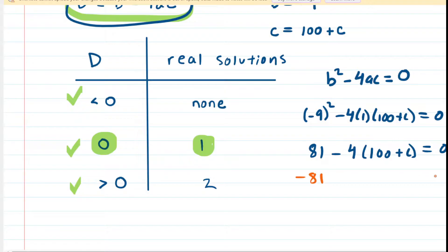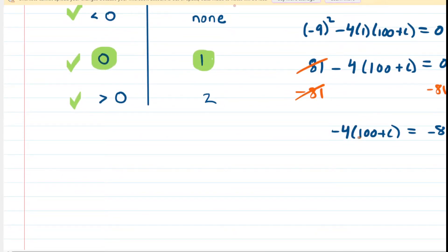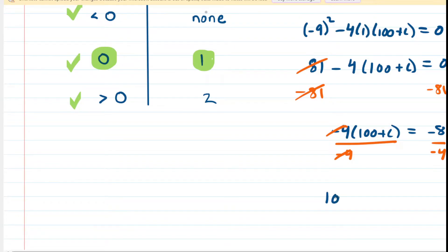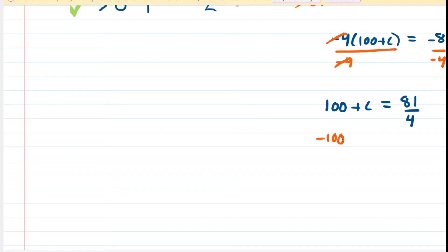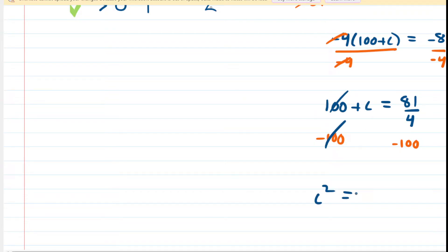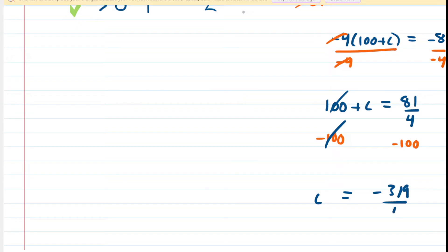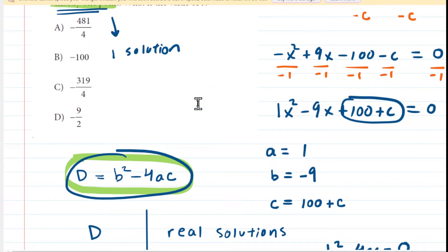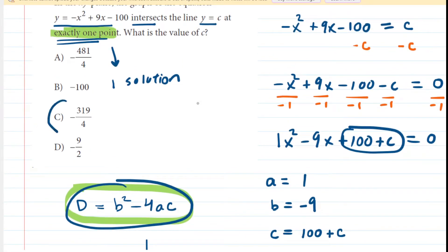We can either distribute or divide by negative four — it's easier to divide both sides by negative four. That cancels it on the left side, leaving 100 plus c. On the other side, negative divided by negative is positive, giving us 81 fourths. We then subtract 100 from both sides. Remember, on the new digital SAT, you can use a calculator for all parts. When you do that subtraction, you get negative 319 over four, which matches the answer choice. That's a great example of a question involving the discriminant.